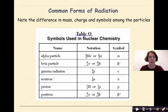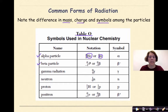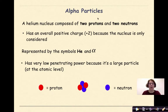Looking at Table O of your reference table, we want to examine the differences in mass, charge, and the symbols used among the particles. We're going to talk about alpha particles, which can be represented as He (helium) or the alpha symbol; beta particles, which are basically electrons represented as E or the beta symbol; gamma radiation, represented by the gamma symbol; and positrons, which look very similar to a beta particle. Make sure you use Table O.